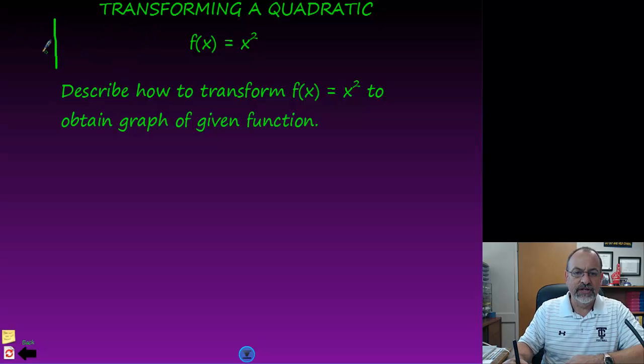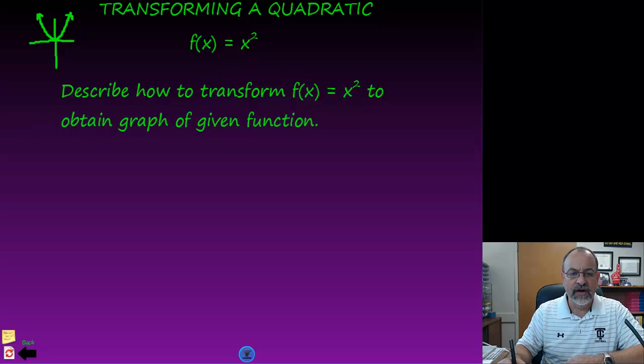So if you imagine this graph, you remember the quadratic is the x squared graph. This would be the parent graph. So if we wanted to graph these new equations, which I'm going to show you, what would they look like?